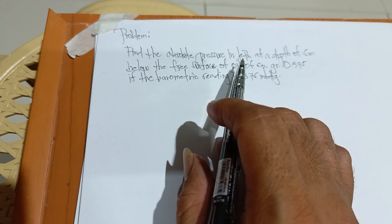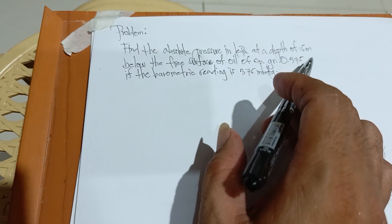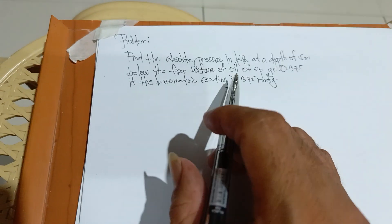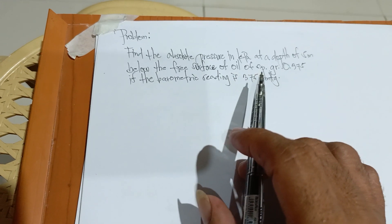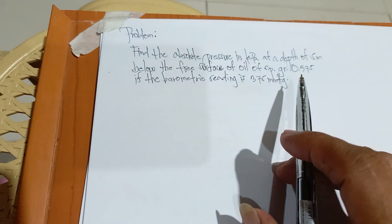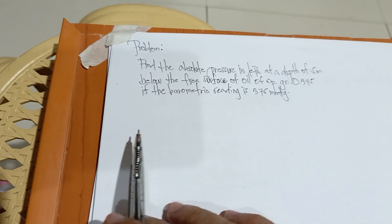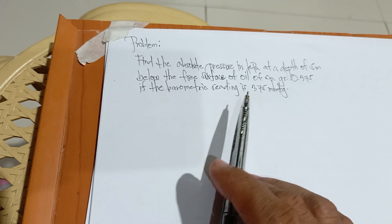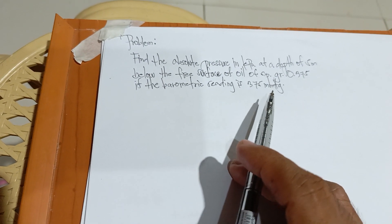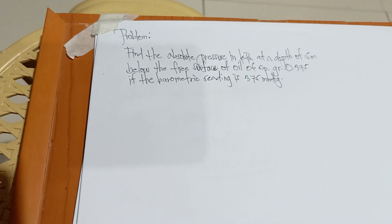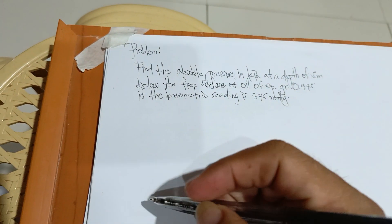Find the absolute pressure in kilopascal at a depth of 5 meters below the free surface of oil of specific gravity 0.357 if the barometric reading is 375 millimeters of mercury. Solution.